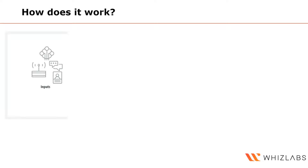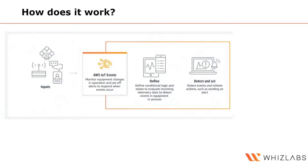How does it all work? Inputs can come from sensors, other AWS services, or applications. These inputs are defined, processed, and acted upon in AWS IoT Events. You define the logic, the state, and what action needs to be taken. When those conditions are met, an action is initiated — as simple as sending an email, sending an SNS message, or triggering another application to take some action.